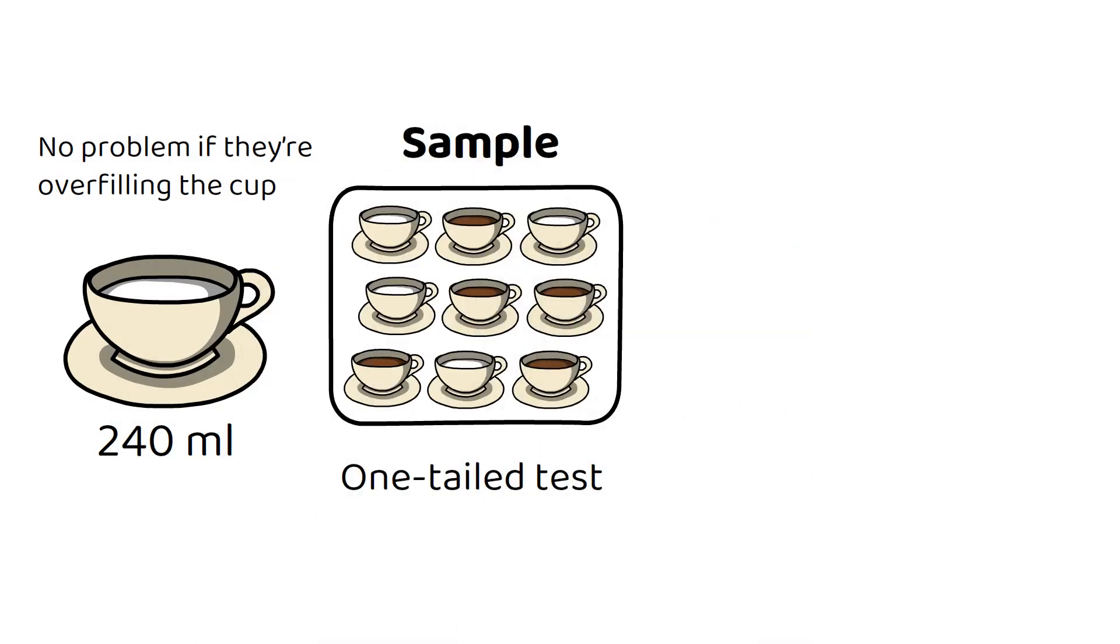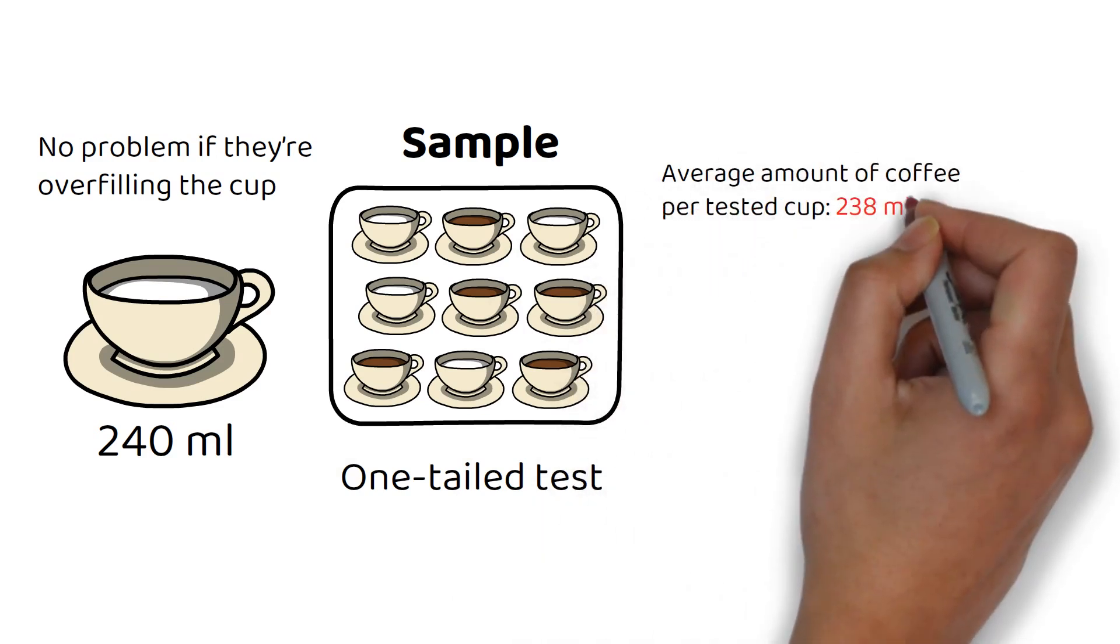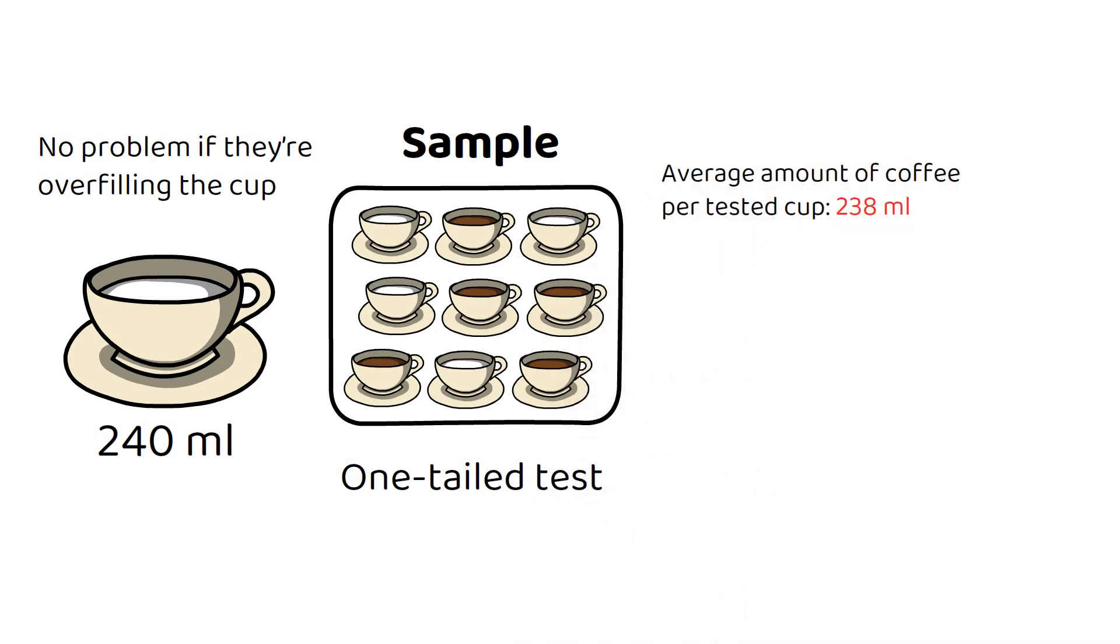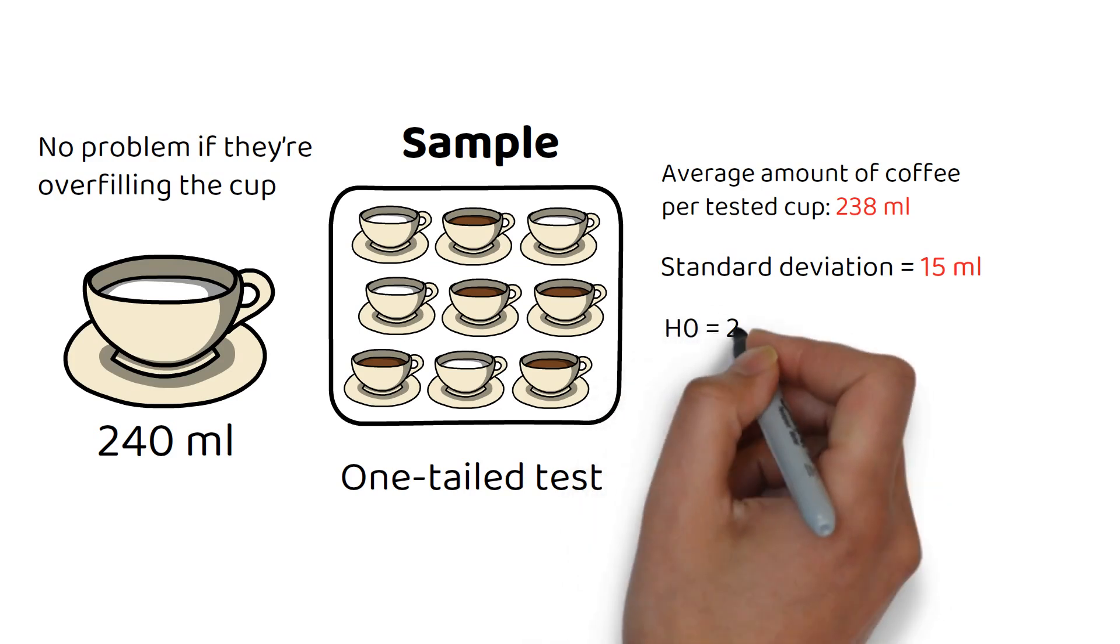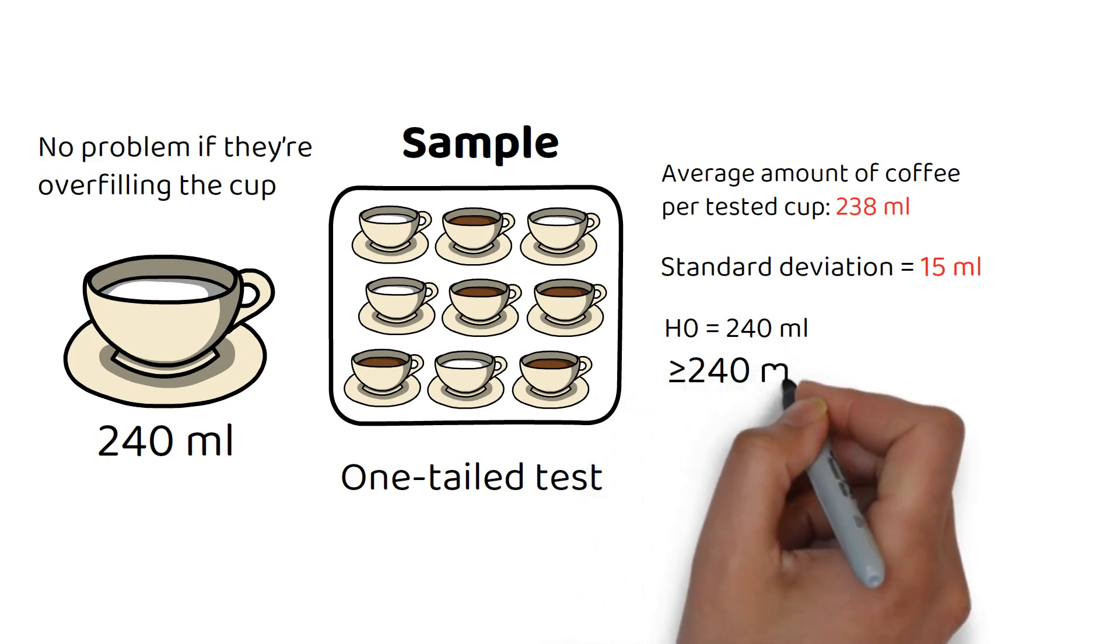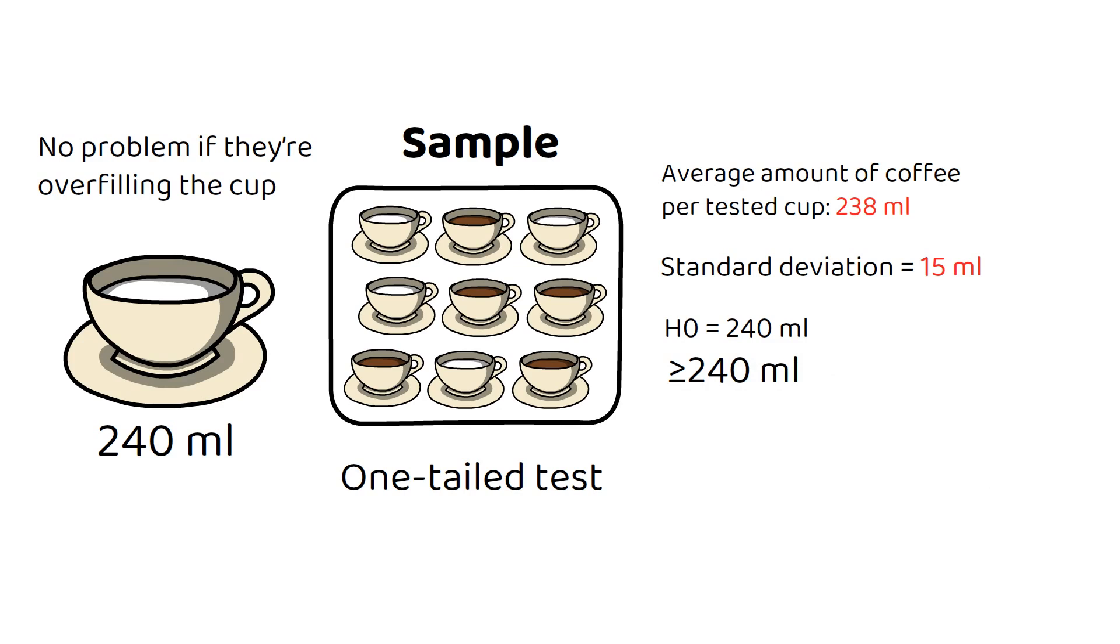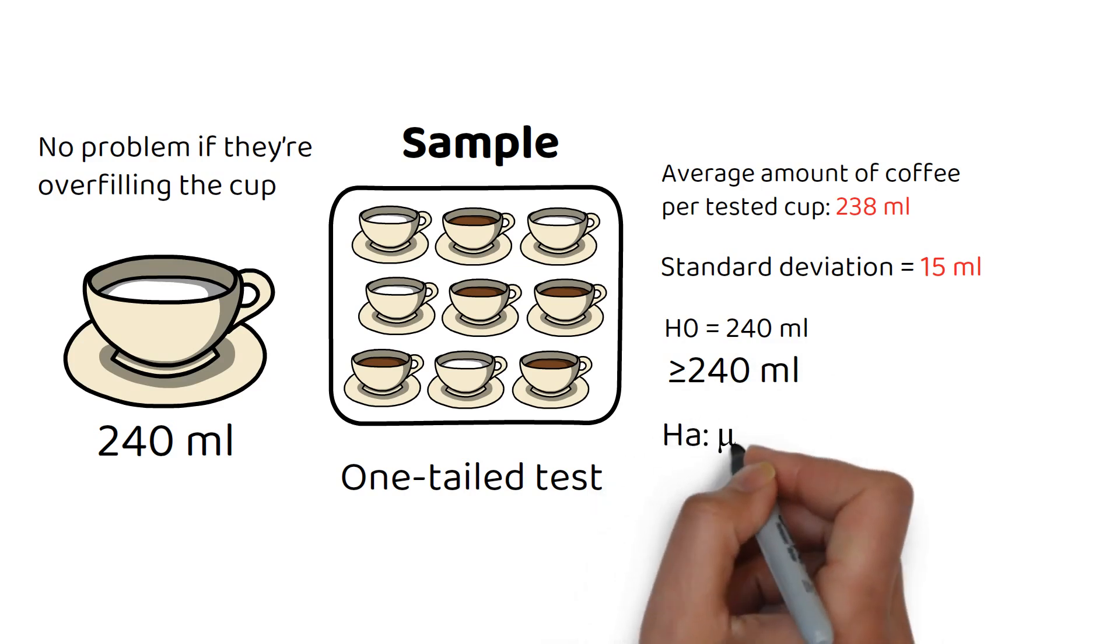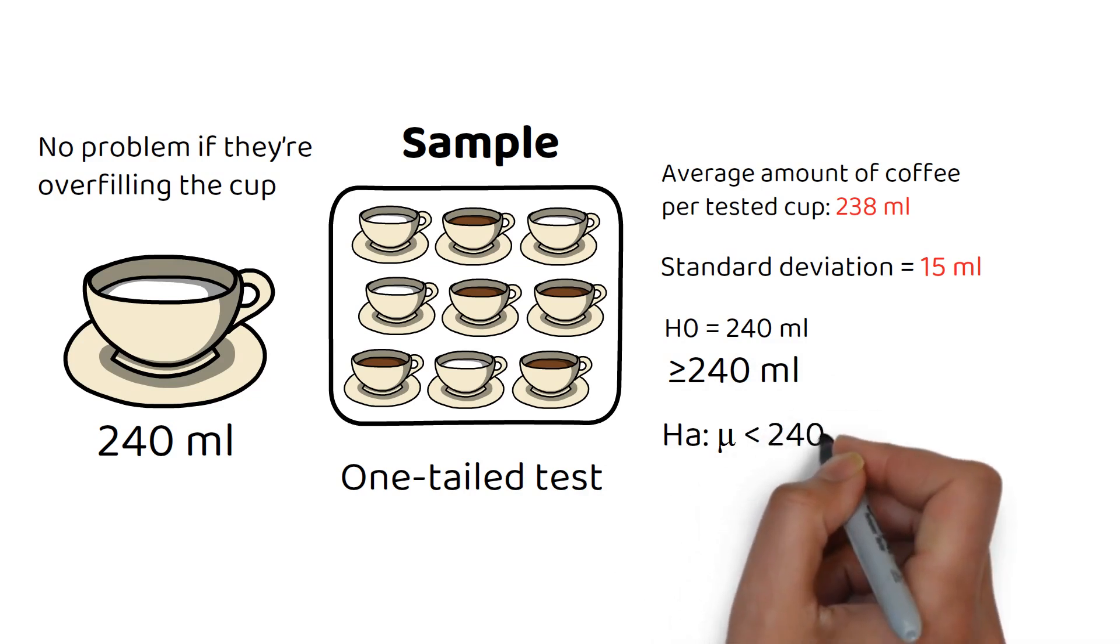Average amount of coffee per tested cup is 238 milliliters. The standard deviation of the 40 measured cups is 15 milliliters. We want to test the null hypothesis that the average is 240 milliliters or more. The null hypothesis is that the average amount of coffee the shop pours is greater than or equal to 240 milliliters. The alternative hypothesis is that the average amount of coffee the shop pours is less than 240 milliliters.